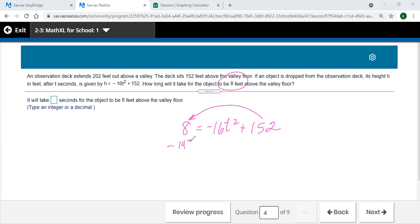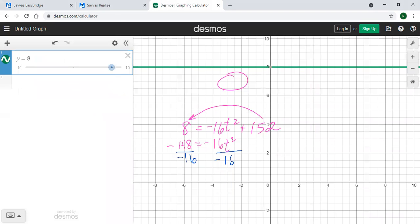One thing we could do here is subtract that 8 to the other side, and we get -148 = -16t². And then I'm thinking I would get my t² alone, 148 divided by 16.